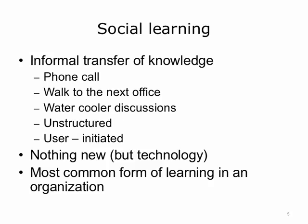In simple terms, social learning is about using social media technologies to close the gap that exists between the training the enterprise provides and the informal learning that is always happening within the clinical setting. Some characteristics of social learning that take place every day in the workplace are: informal transfer of knowledge, phone calls to coworkers when you are looking for information, a walk to the next office, water cooler discussions with colleagues. The learning is unstructured and is user-initiated. Social learning is the most common form of learning in an organization.